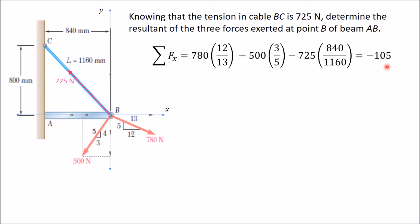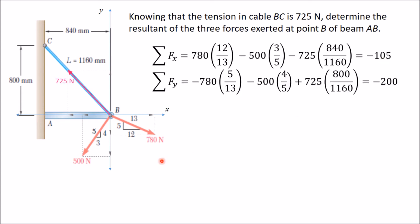For the y-components: the 780 Newton y-component is negative, so we write −780 × sin θ. Sin θ = opposite/hypotenuse = 5/13 from the triangle, giving −780 × (5/13). The 500 Newton y-component is also negative: −500 × sin θ, where sin θ = 4/5 from its triangle, giving −500 × (4/5).